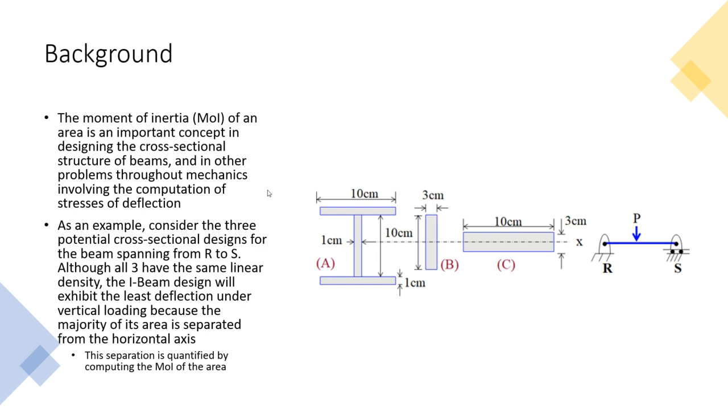Moment of inertia is just a metric that we use to quantify how much area is separated from an axis. It turns out, in this case, for computing the deflection of a beam, that measure is meaningful. The areas which have large moment of inertia are going to experience minimal deflection.